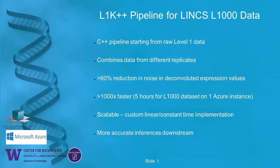I'm going to be talking about a new pipeline that we've developed, the L1K++ pipeline, for processing L1000 data, which improves the accuracy of the gene expression data from which all the inferences are made later on downstream. The L1K++ pipeline is named L1K++ because it's completely written in C++, and it starts processing from the raw level one data — the actual fluorescent level values. The main idea of L1K++ is to combine data from different replicates in order to increase accuracy, and this results in at least a 60% reduction in noise in the deconvoluted gene expression values.